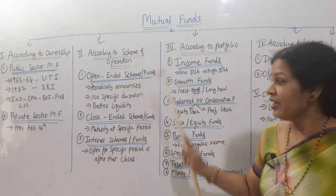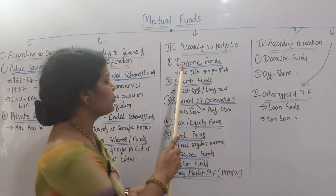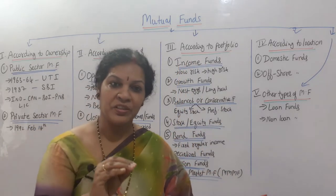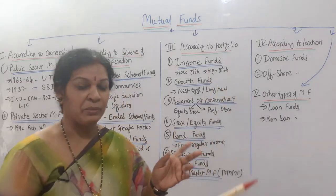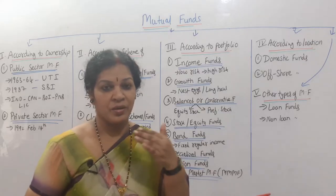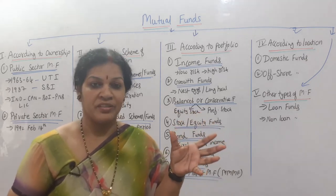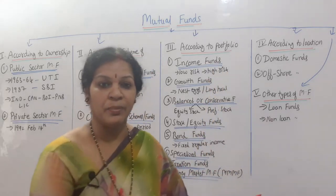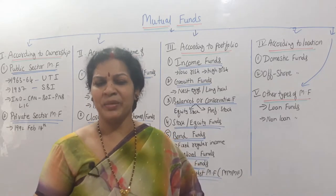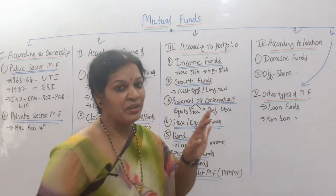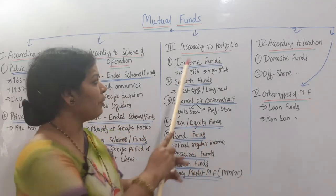Now, according to portfolio, we have different kinds of funds. The first is income funds. When you purchase income funds, you get a regular income. There are low-risk and high-risk income funds. If you want low risk, you get a regular and safe income. If you take higher risk, income may fluctuate — sometimes it may decrease, sometimes increase. But in income funds, every year or every month you can expect some income.